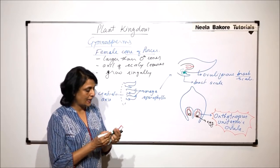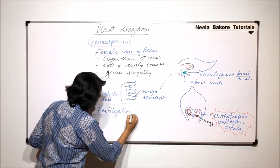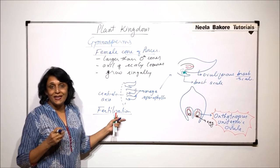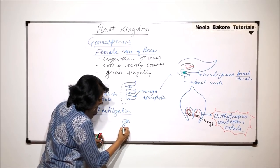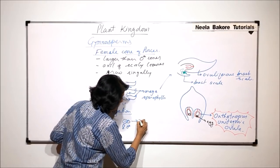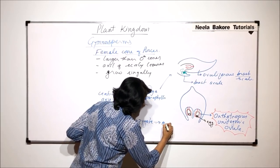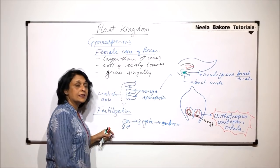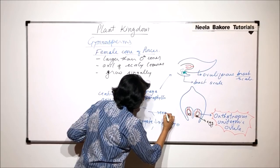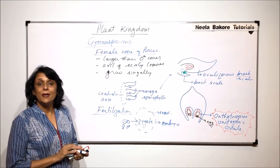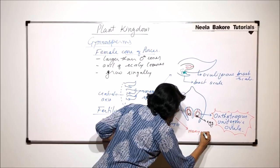When fertilization takes place, the pollen grain would release the male gamete. The male gamete will fuse with the egg. This is the egg, it fuses with the male gamete. This is the female gamete, this is the male gamete. The zygote which is formed is going to change into the embryo. Because the zygote is inside the ovule, the ovule is going to change into the seed, and the seed is going to be naked. The seed in case of Pinus has many cotyledons.